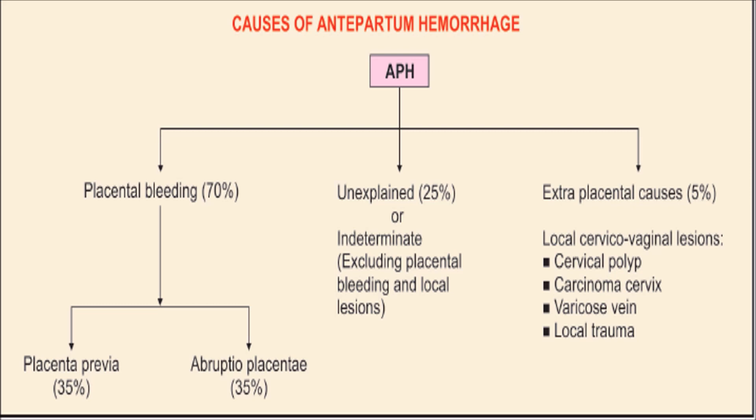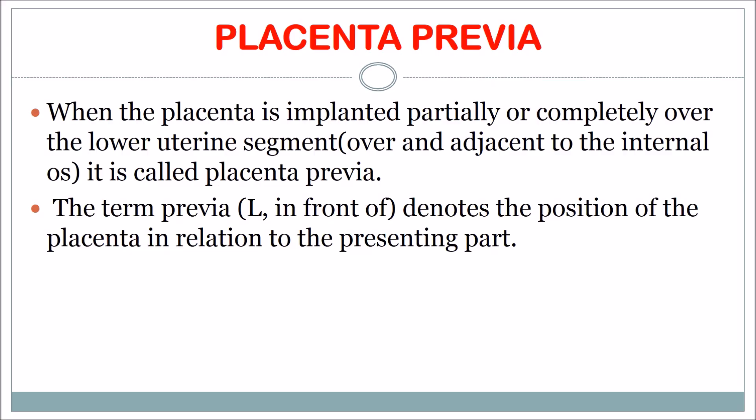Placental bleeding can be of placenta previa or abruptio placentae. In placenta previa, the placenta is completely over the lower uterine segment. The term 'previa' is Latin and denotes the position of the placenta in relation to the presenting part.